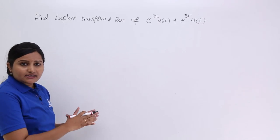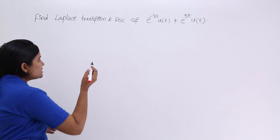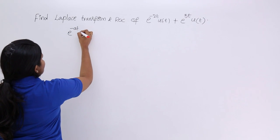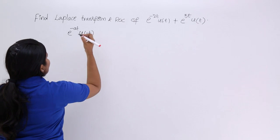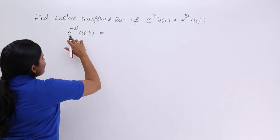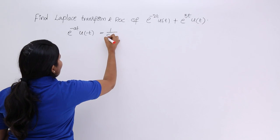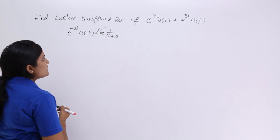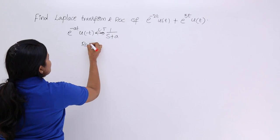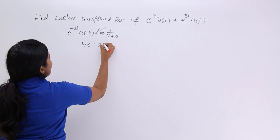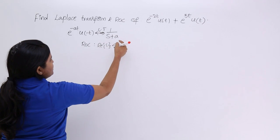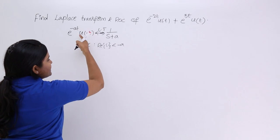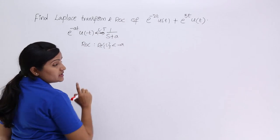To solve this, I want to consider our basic exponential Laplace transform and ROCs. We know that the Laplace transform of e^(-at)u(-t) gives 1/(s+a) as the Laplace transform. The ROC for this is Re(s) < -a, because this is a left-sided signal.